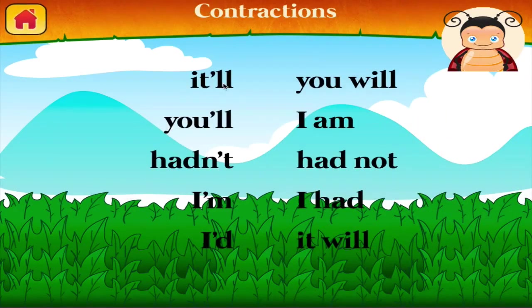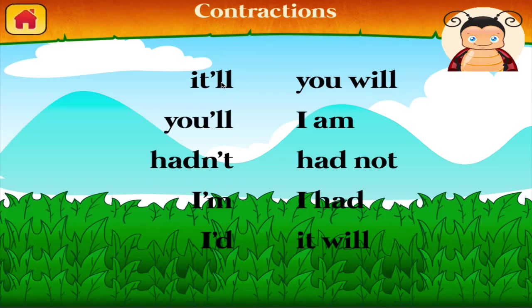Contraction. A contraction is a word made by shortening and combining two words. Match the contractions to the original word.